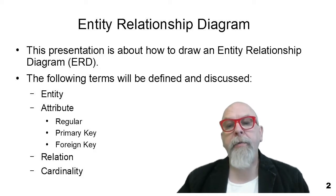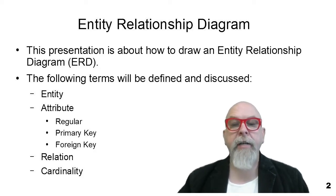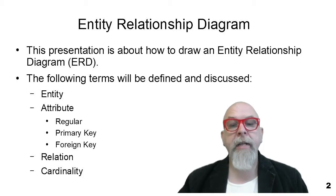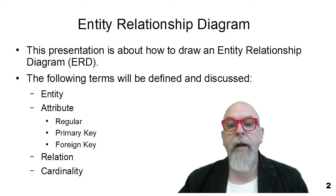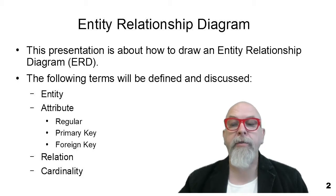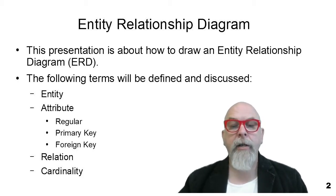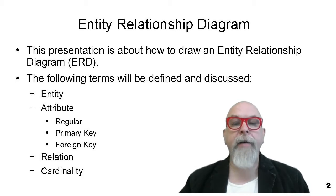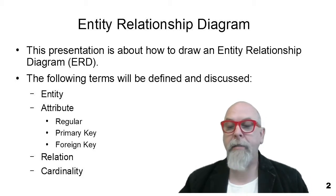The following things will be discussed and defined: what is an entity, what is an attribute, and the three types of attributes — regular attributes, primary key attributes, and foreign key attributes. A relation and the cardinality of a relation will all be discussed.